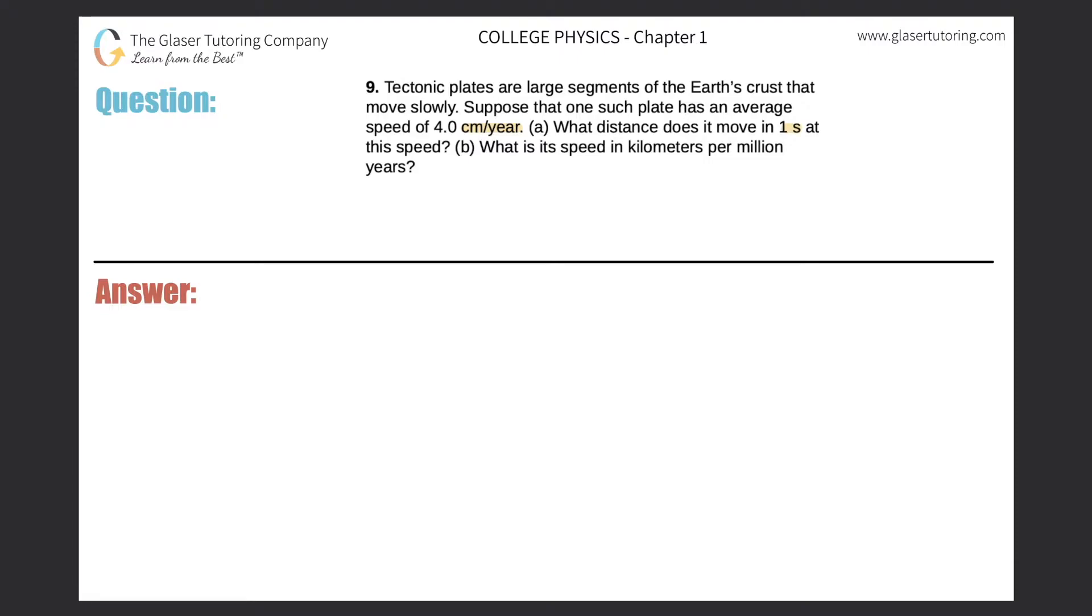Okay, so they're asking us to calculate a distance per time. They don't give us the units that we need to calculate for distance, so I'm just going to assume that we can answer the distance in centimeters. Let me write down what I'm given. So we have 4.0 centimeters per year, per one year that is. Not one yard, but one year.